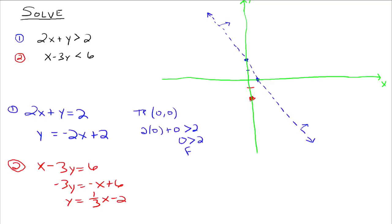And then the slope is 1 3rd, so we go up 1 over 3. 1, 2, 3. And up 1 over 3. 1, 2, 3. So up 1, 1, 2, 3, plot a point. Up 1, 1, 2, 3, plot a point.